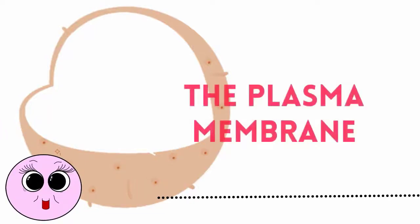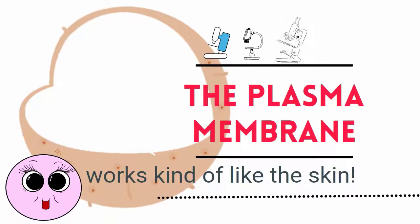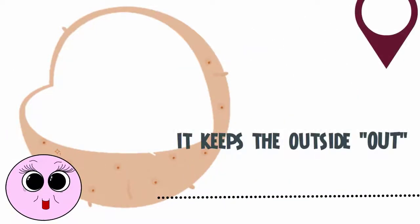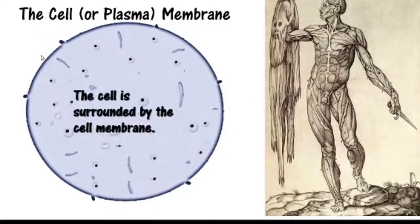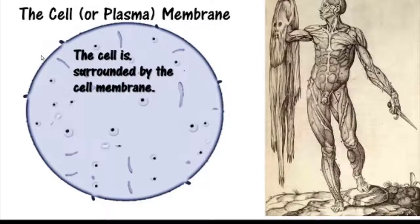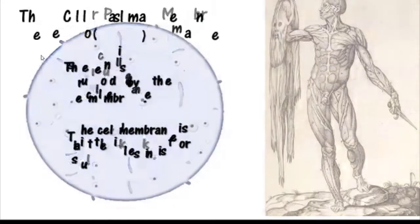The plasma membrane, or cell membrane, works a little bit like our skin. It keeps the outside out and the inside in. The cell is surrounded by the cell membrane.